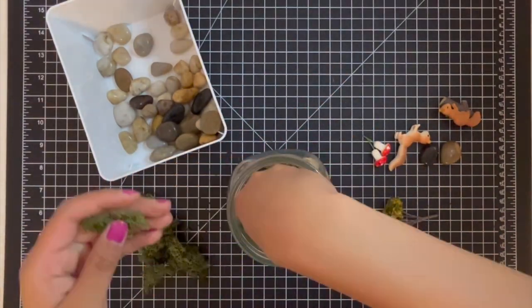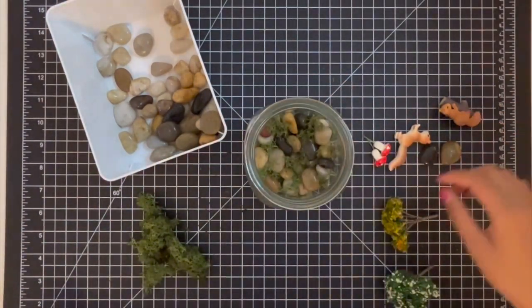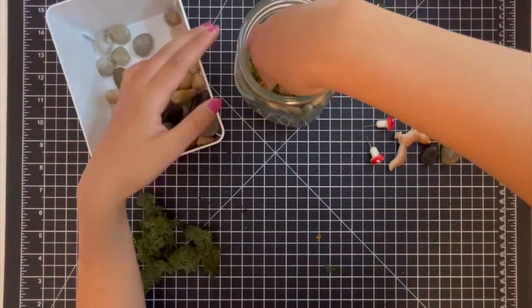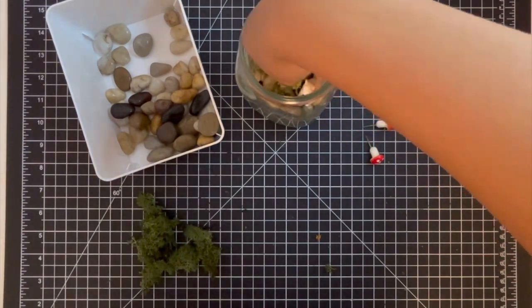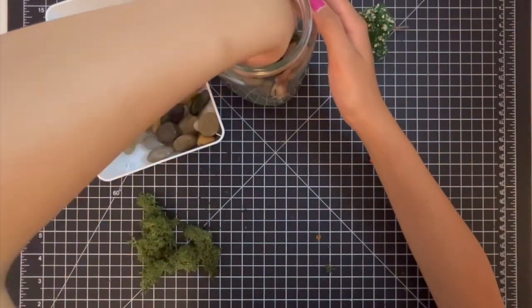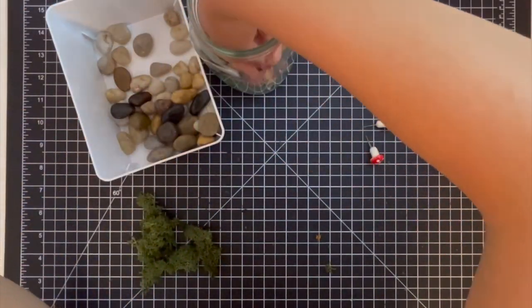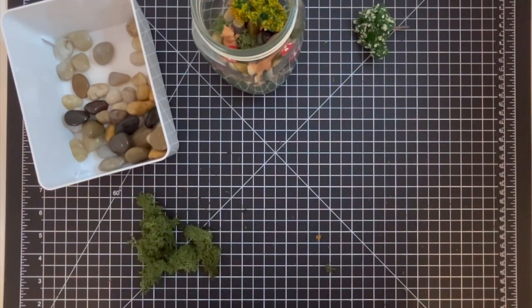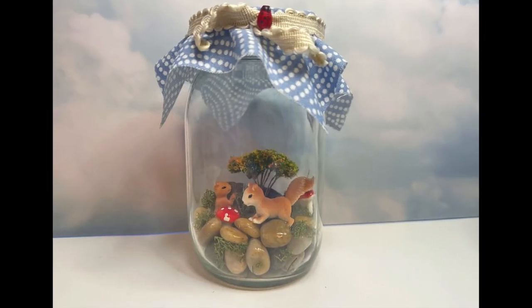Here I'm going to be making a woodland squirrel scene so I have moss, trees, rocks, mushrooms, and these adorable squirrel figurines. Once you have a good idea of what you want to do, you can start assembling things in place in the mason jar. Feel free to experiment with placement and don't feel like you have to glue everything down right away.